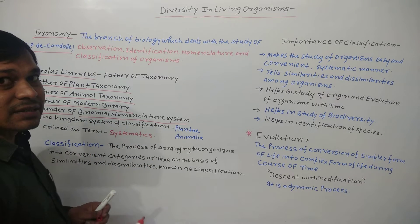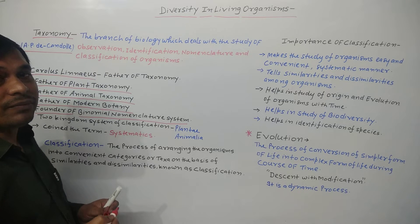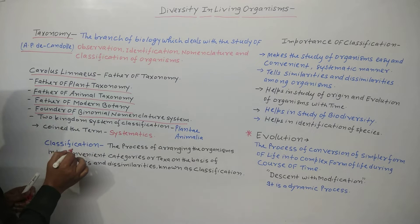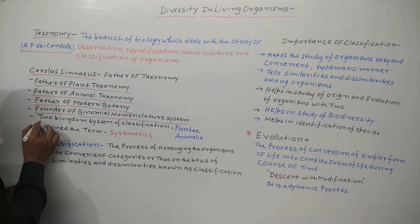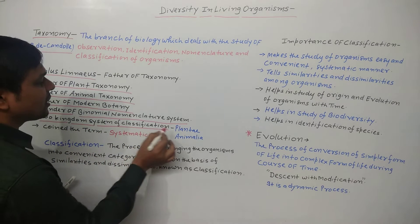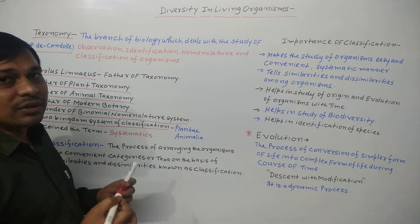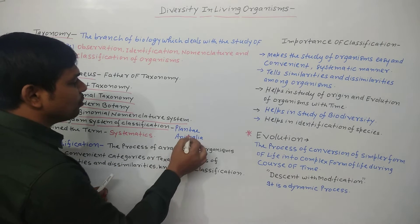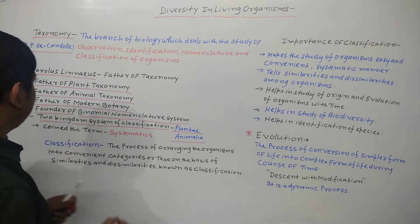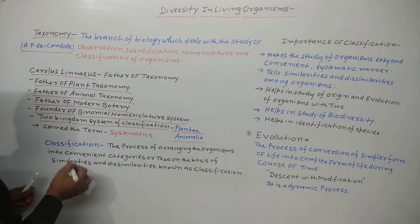Carolus Linnaeus is also the founder of the Binomial Nomenclature System, which we will discuss further. He also gave the Two Kingdom System of Classification, according to which all organisms on earth are divided into two groups: Plantae and Animalia — plant and animal.